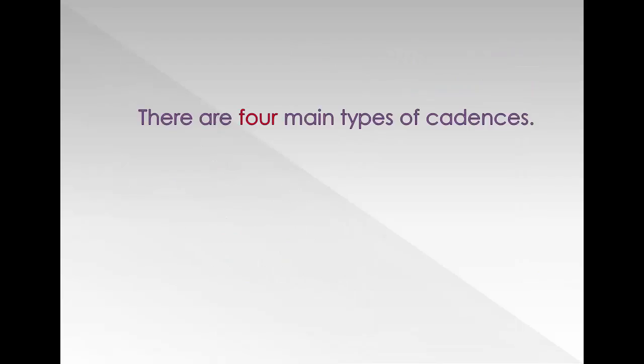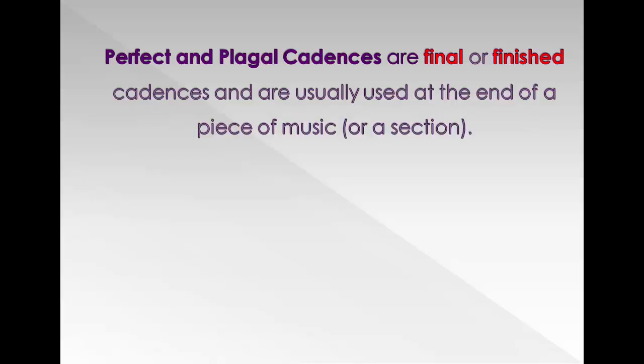There are four main types of cadences. Perfect and plagal cadences are final or finished cadences, and are usually found at the end of a piece of music or a section of music.